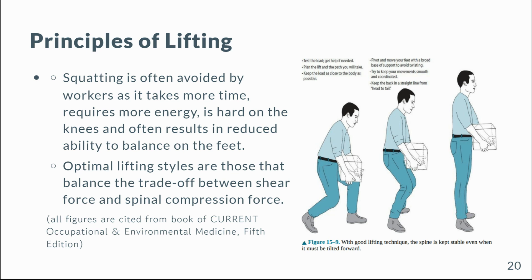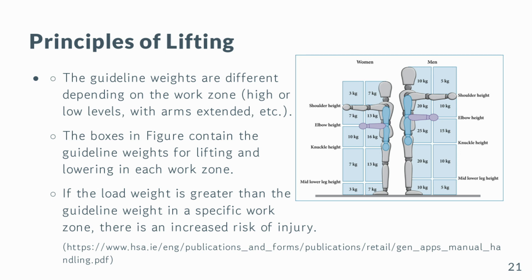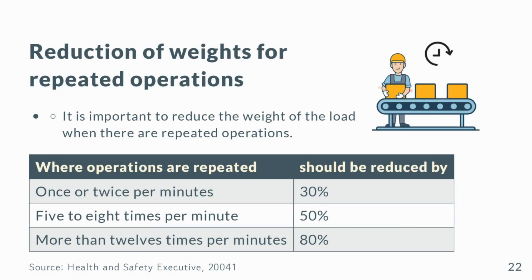Squatting is often avoided by workers as it takes more time, requires more energy, is hard on the knees, and often results in reduced ability to balance on the feet. Optimal lifting styles are those that balance the trade-off between shear force and spinal compression force. The guideline weights are used to determine if a load is too heavy to handle, which increases the risk of injury. The guideline weights differ depending on the work zone — high or low levels, with arms extended, etc. If the load weight is greater than the guideline weight in a specific work zone, there is an increased risk of injury. It is important to reduce the weight of the load when there are repeated operations to minimize the risk of injury.